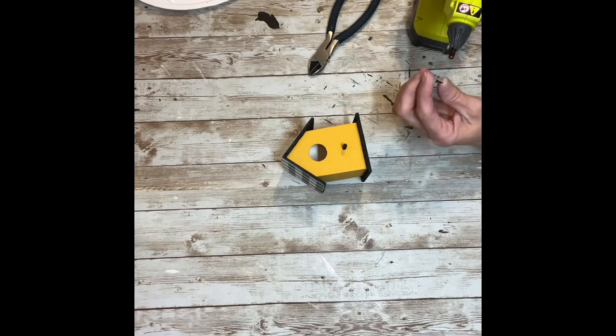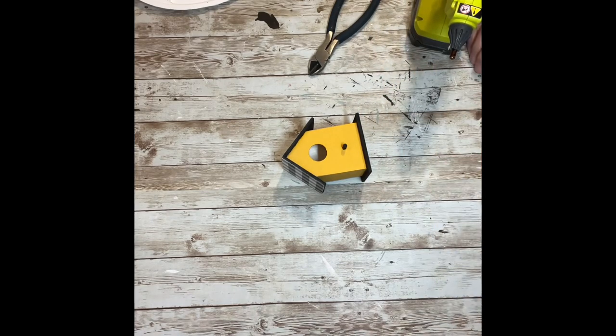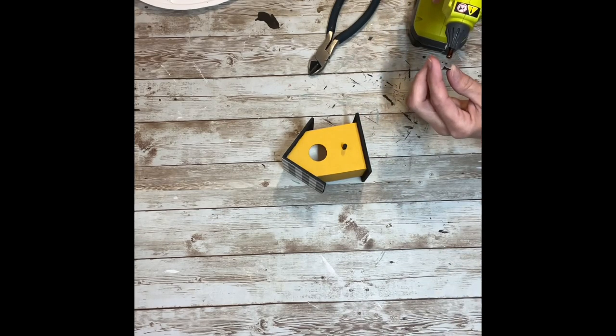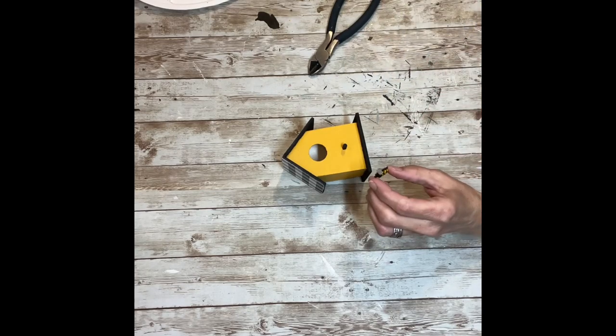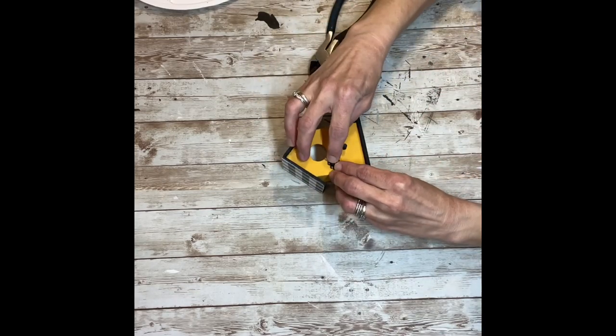Then I'm going to take a Sharpie and draw the little lines for a bee trail right around the perch and right back up to the little hole on the birdhouse.